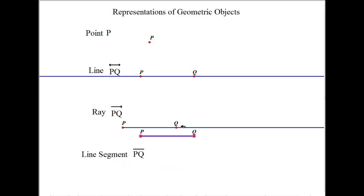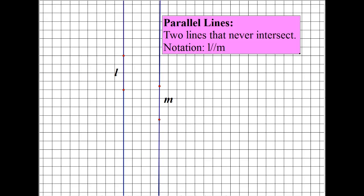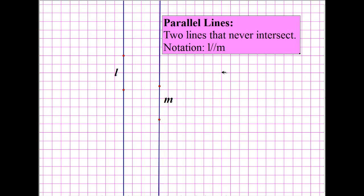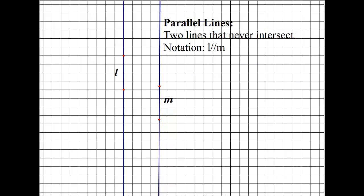A line segment is basically part of a line that lies between two fixed points. Two lines are said to be parallel to each other, and the notation is L double backslash M, showing that two lines are parallel. L and M are parallel to each other, as you can see from the grid. Without a grid, you might have a harder time distinguishing between parallel lines and non-parallel lines.